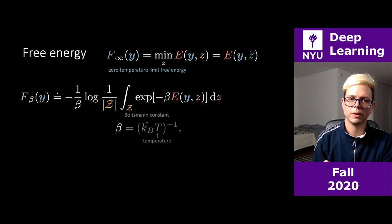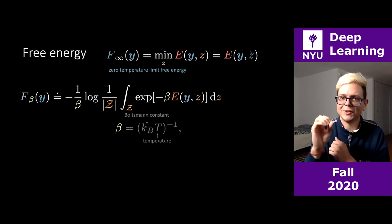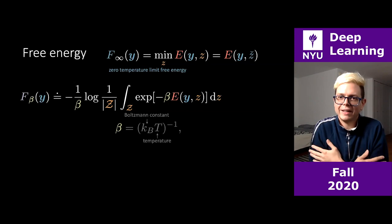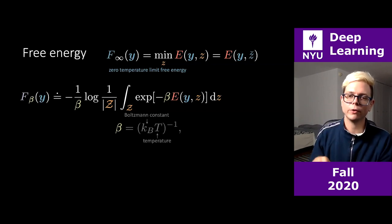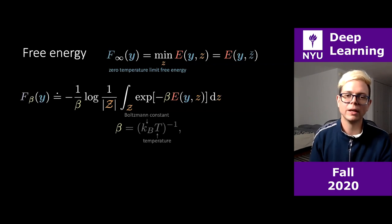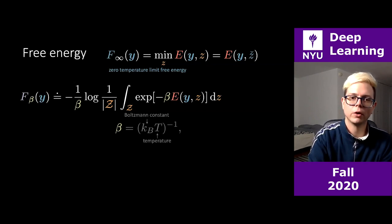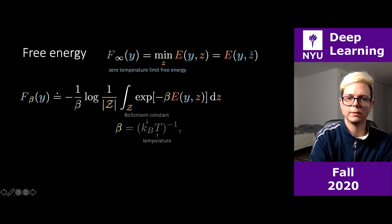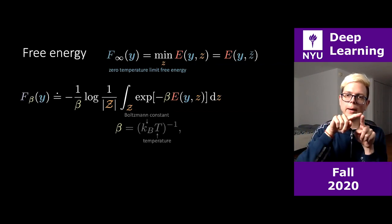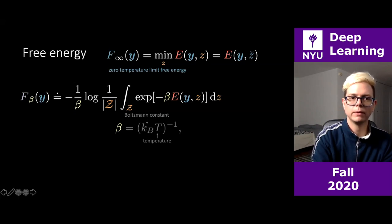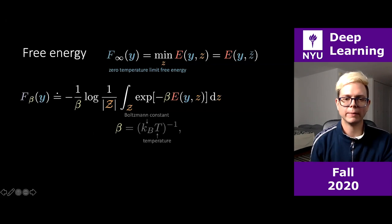Now you can understand why f-infinity is called the zero temperature limit free energy — zero temperature means beta is plus infinity. When beta is infinite (super cold), the free energy is exactly the minimum. If you warm up a little, the free energy becomes a summation of multiple components multiplied by the measure of the domain of z — in our case, two pi.